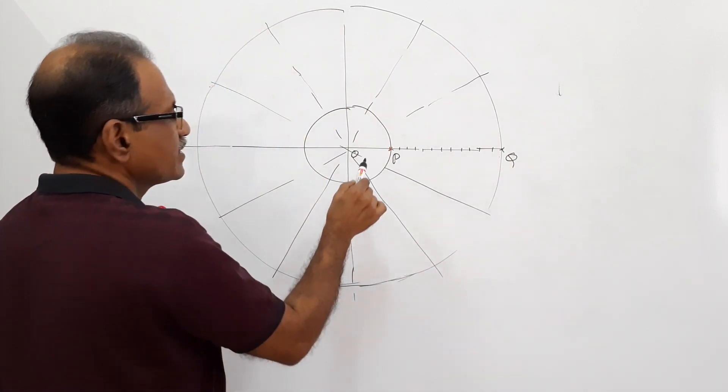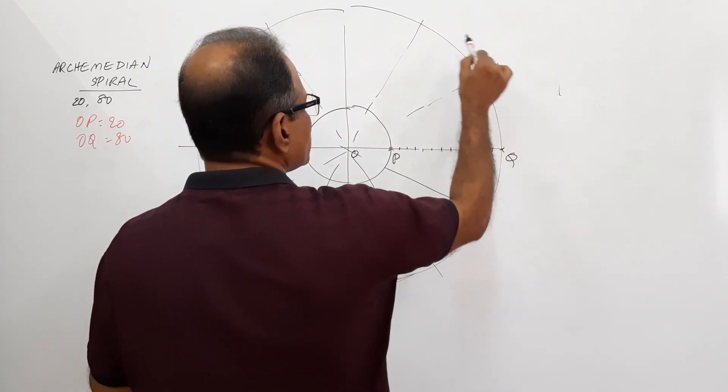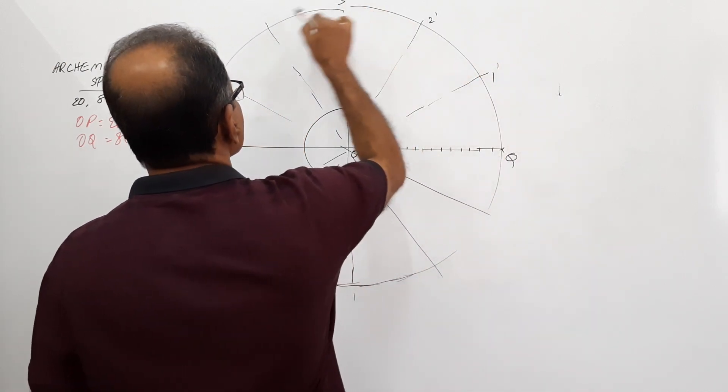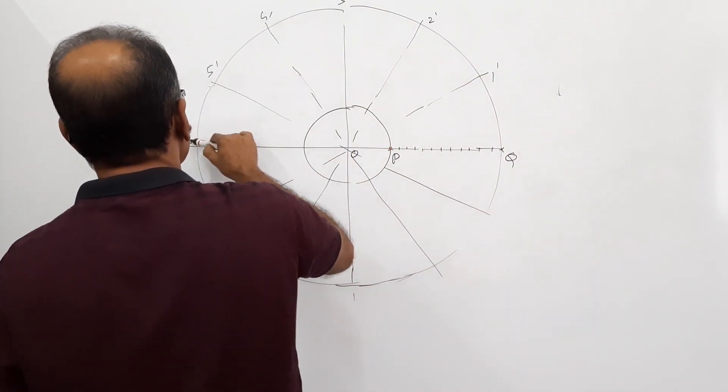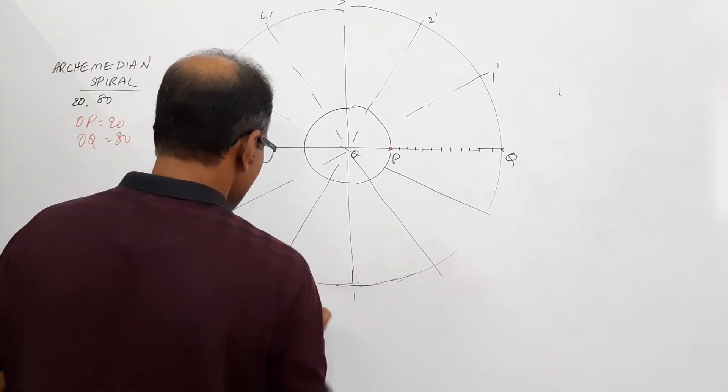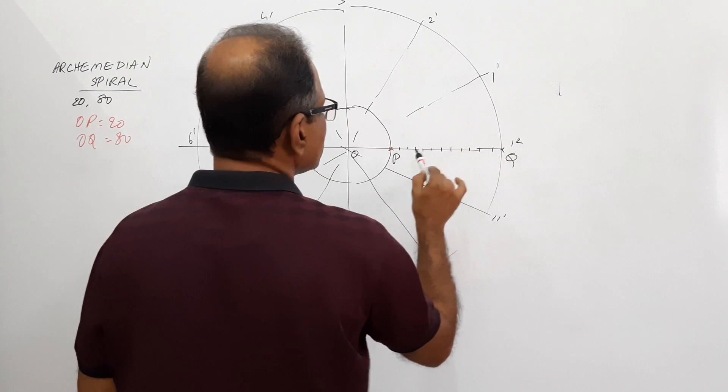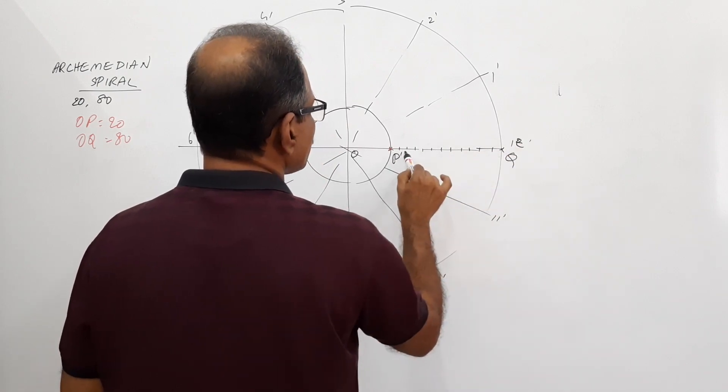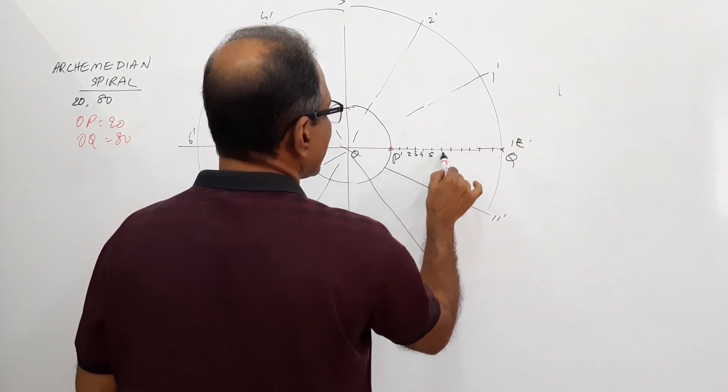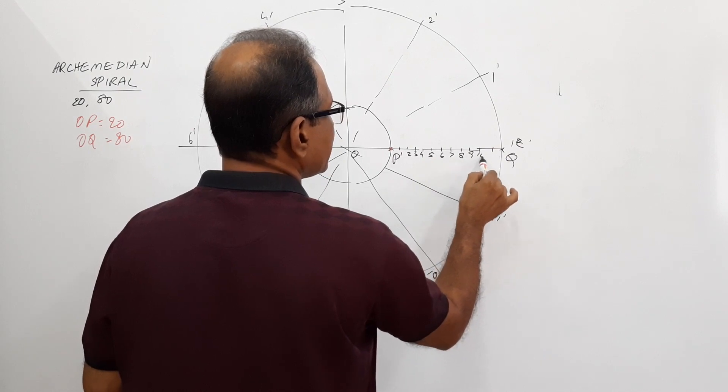Now, when the initial position of, I name this, 1-2-3-4-5-6-7-8-9-10-11-12. And this has 1, 2, 3, 4, 5, 6, 7, 8, 9, 10, 11, 12.